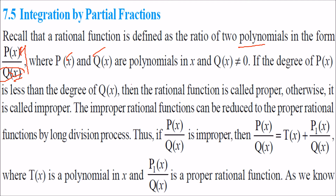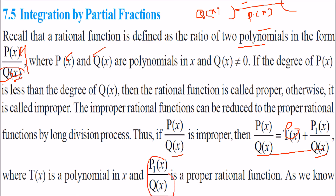We need to reduce the rational function to a form we can integrate. If p(x)/q(x) is improper, we divide to get t(x) plus p₁(x)/q(x), where t(x) is a polynomial and p₁(x)/q(x) is now a proper rational function. You will understand this when we go to the examples. So we have made a proper rational function and we know how to solve it.